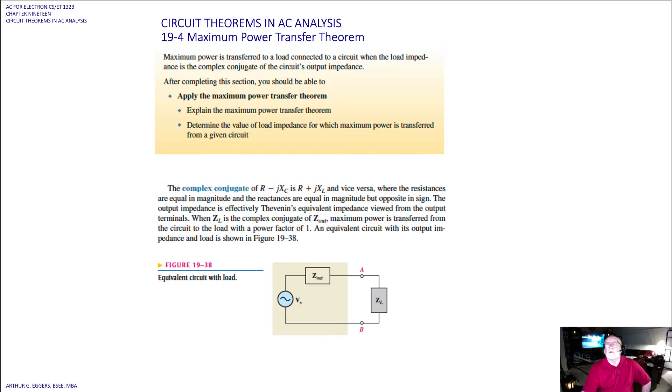The resistances are equal to the magnitude, the reactances are equal to the magnitude but opposite in sign. The output impedance is effectively Thevenin's equivalent impedance viewed from the output terminals. When Z sub L is the complex conjugate of Z out, maximum power is transferred from the circuit to the load with a power factor of one.